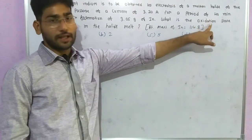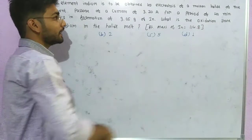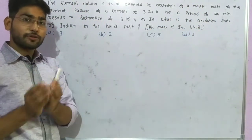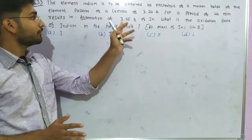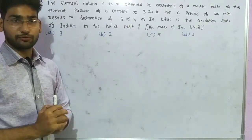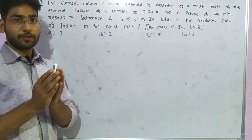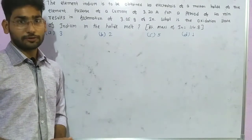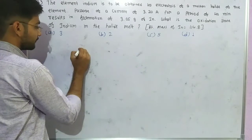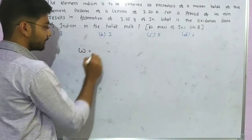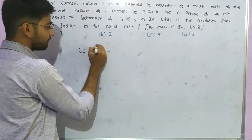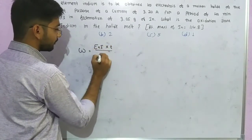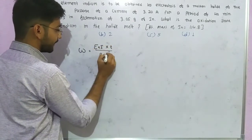We have to find the oxidation state of indium in the molten metal halide. Using Faraday's first law, whatever weight is deposited in electrolysis equals the equivalent mass of that element multiplied by current multiplied by time, divided by 96,500 coulombs.